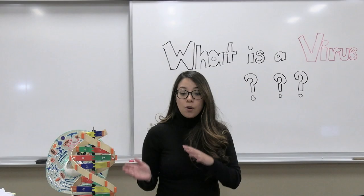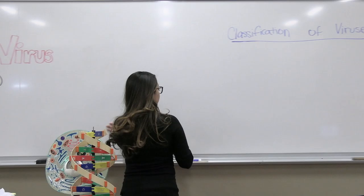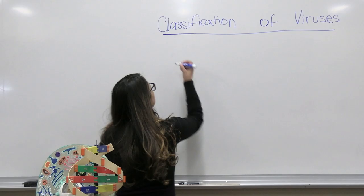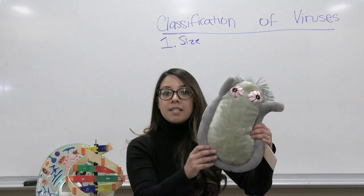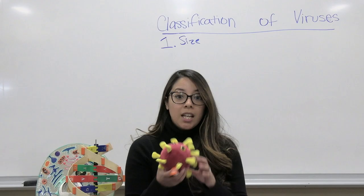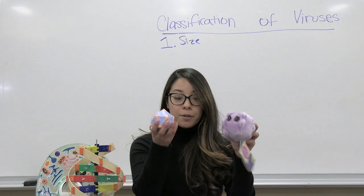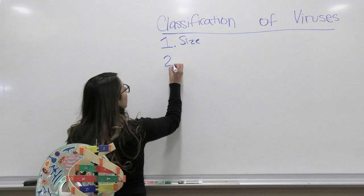Now that we know the definition of a virus, let's go ahead and classify them. There are four different ways in which we classify a virus. The first is by size. Viruses come in many different sizes — we have this zombie virus right here, we have COVID-19, and we have more. As you see, there are all different types and shapes.